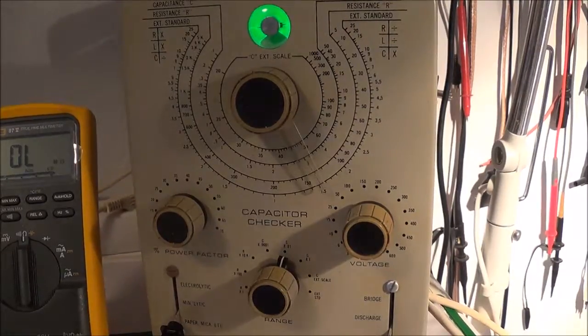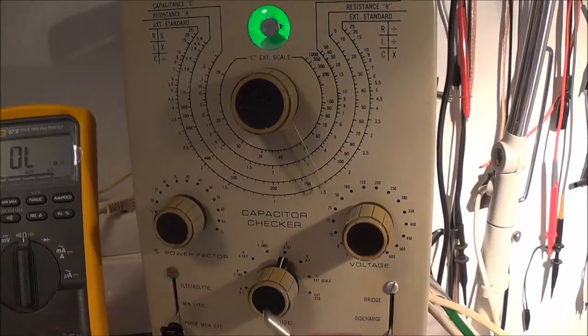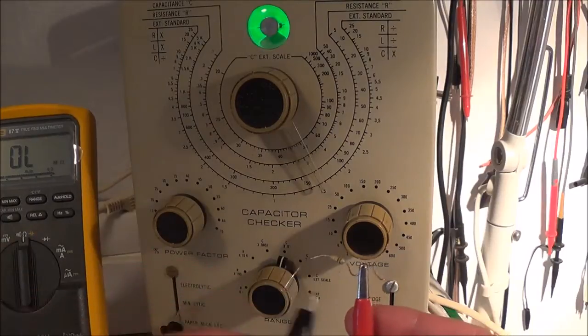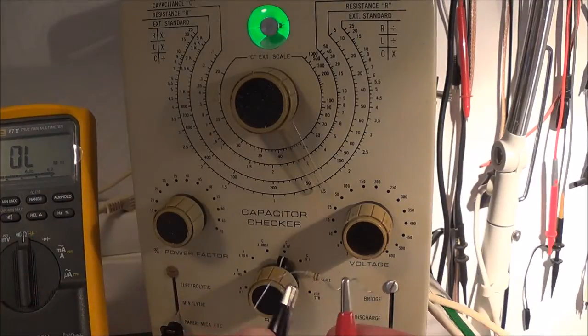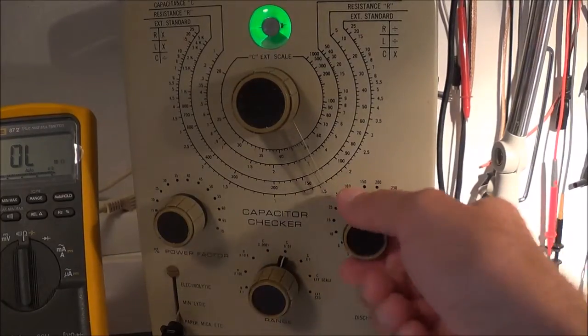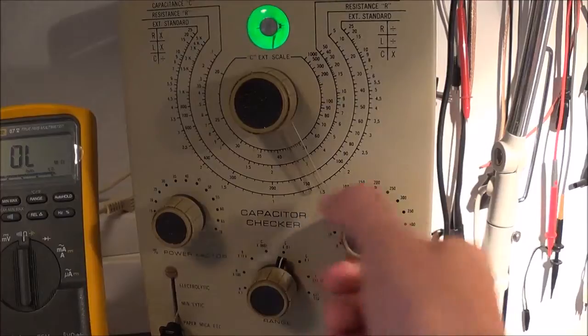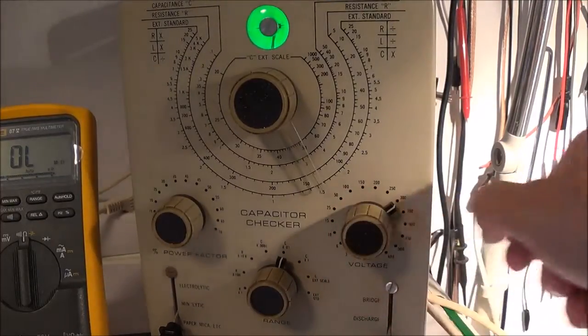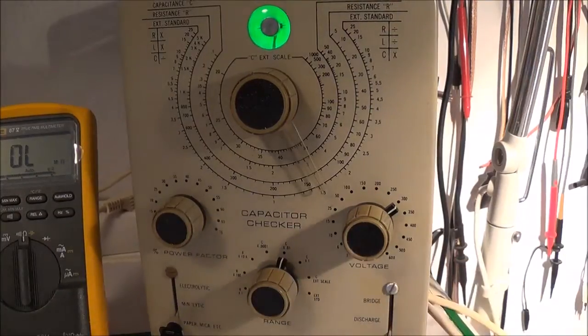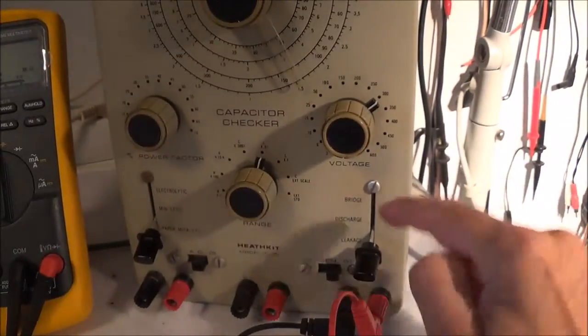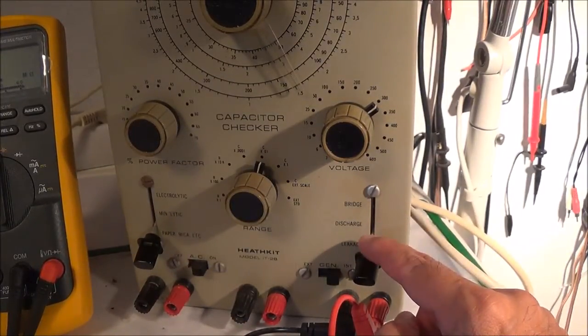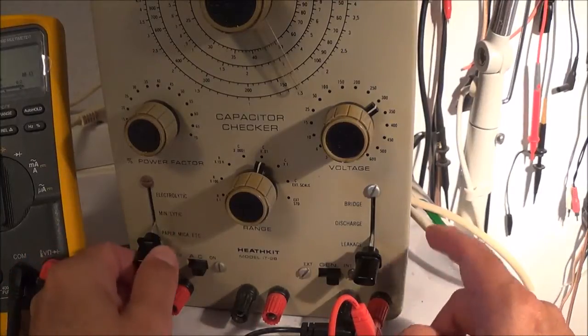And then connect this across the test terminals. Thereafter, I have to turn the voltage up to 300. And of course, this bridge discharge leakage switch has to be in the leakage position.